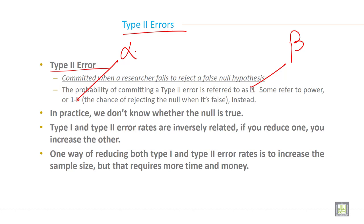In practice, we don't know whether the null is true. Type 1 and type 2 error rates are inversely related. If you reduce one, you increase the other.